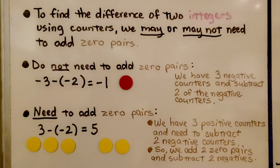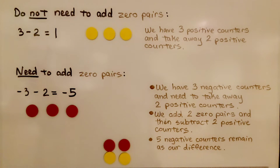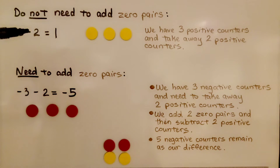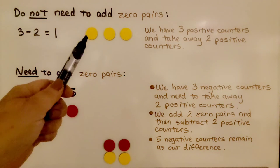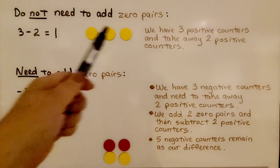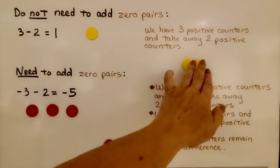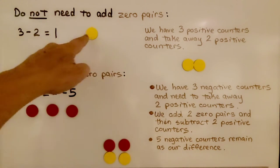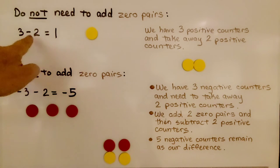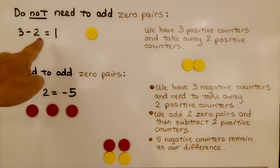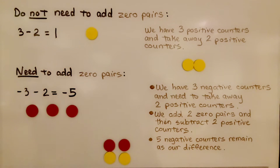For this one we do not need to add zero pairs. We have positive three and we're taking away positive two. We put three positive counters and just take two of the positive ones away. We have one positive remaining.